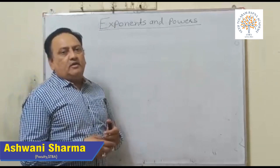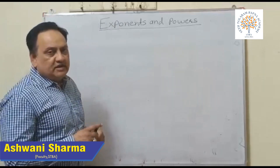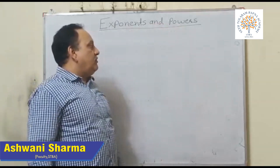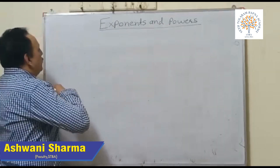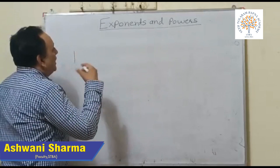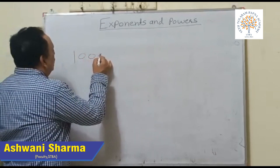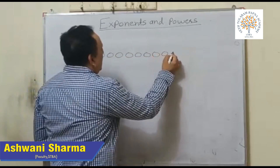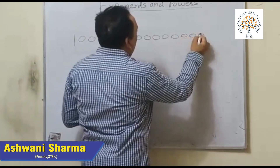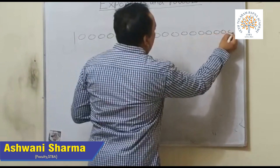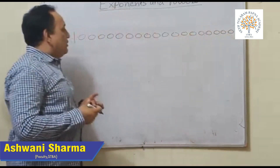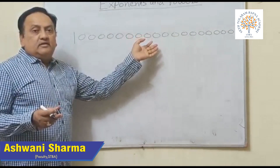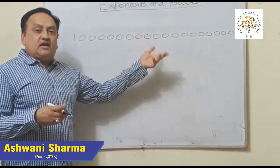Today we are going to read the chapter on exponents and powers. If I write 1 and write behind so many zeros — 1, 2, 3... up to 18 zeros — it is such a large number, and it is difficult to write such a large number.